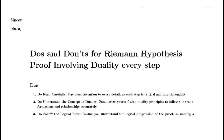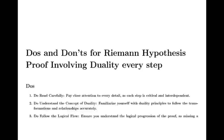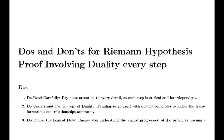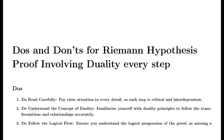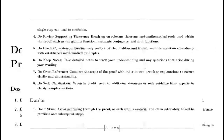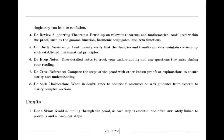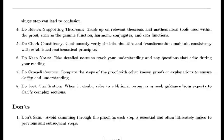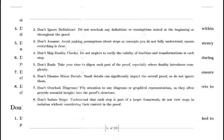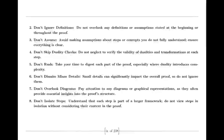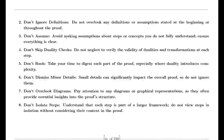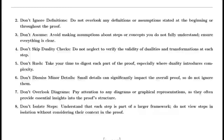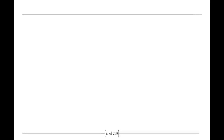Euler also tackled the Basel Problem, which was concerned with finding the exact sum of the reciprocals of the squares of the integers. By examining the sine function and its product representation, Euler derived a formula for this sum. He showed that the sum of these reciprocals is equal to pi squared over 6. This result was a significant achievement in mathematics and highlighted Euler's ability to uncover connections between different mathematical concepts.